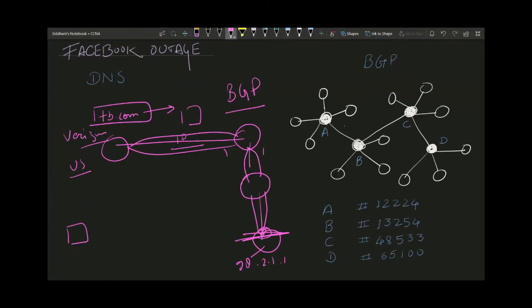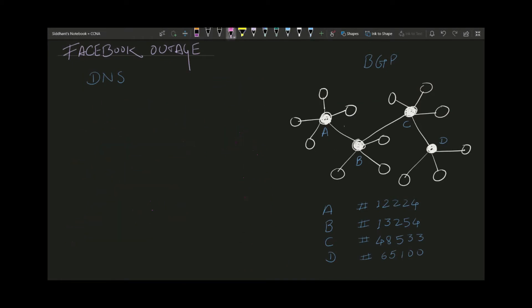It will advertise that thing to its neighbor router, and that neighbor router will advertise to other neighbors. This neighbor will be advertised to other neighbors. This is how actually the internet works. Suppose this is a Facebook server with a BGP router, and in this BGP router Facebook will be advertising its network 98.2.1.1. In the router's routing table, it will be advertising some routes and other ISPs will be getting it from Facebook's BGP router.